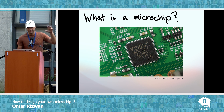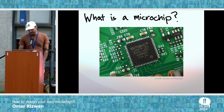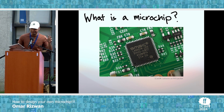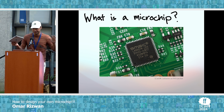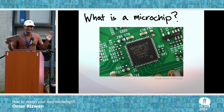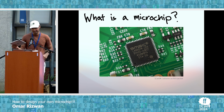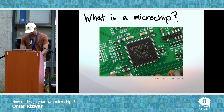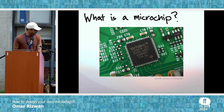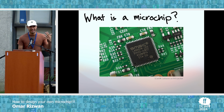A camera is also just a grid of little light sensors printed on silicon the same way. Motion sensors, even a projector — these are little micro-mechanical things fabricated the same way. Basically almost all important technology from the last few decades is designed this way: drawn and then etched into silicon. So I wanted to learn how to make one.